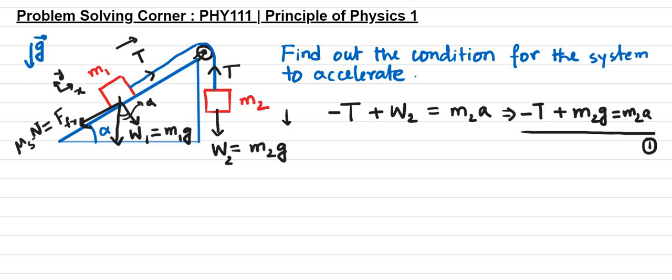Along the Y axis, since there is no acceleration, we have W1 with a negative sign plus N, and that is going to be zero. So N equals W1, which is M1G cosine of alpha. That's equation number 2.